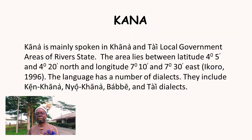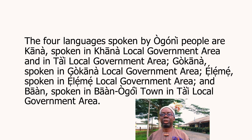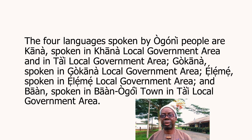Kana is one of the languages spoken in Ogoniland in Rivers State. And there are four languages spoken in Ogoniland in Rivers State. Kana is spoken in Kana, Dokogome area and in Thai, Dokogome area in Ogoniland.